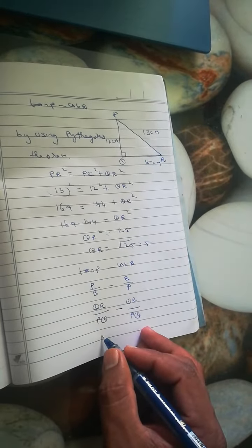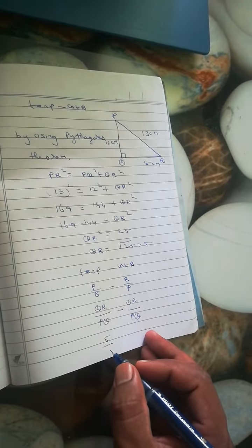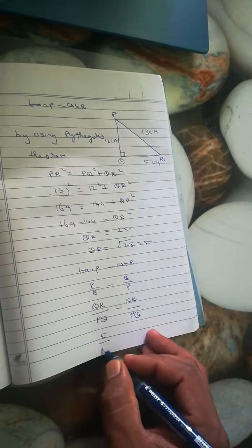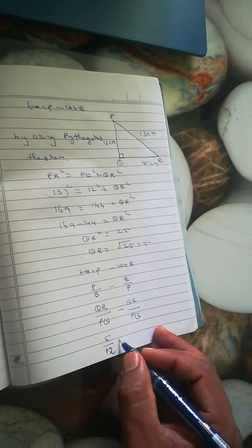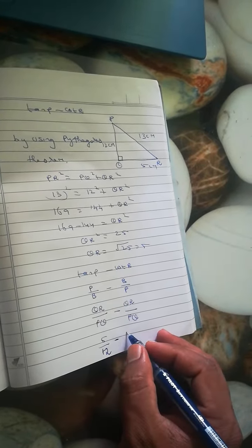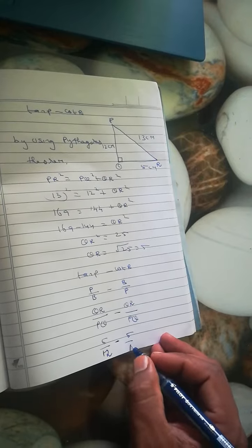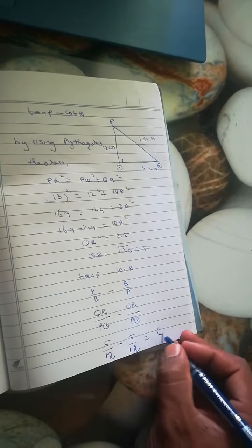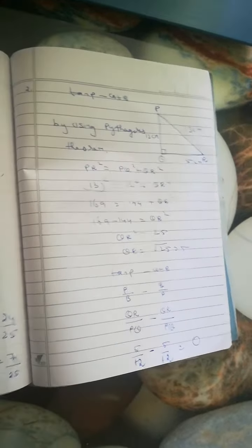Now applying the values: QR is 5, PQ is 12, so 5/12 minus QR is 5 by 12. The answer is 0. Both cancel, the answer is 0.